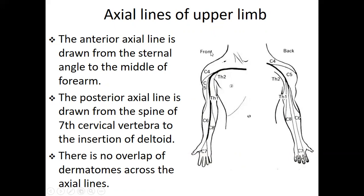Looking at the front view, the anterior axial line is drawn from the sternal angle to the middle of the forearm. The posterior axial line is drawn from the spine of the C7 cervical vertebra to the insertion of the deltoid muscle. Importantly, there is no overlap of dermatome across the axial line - this is the key point you have to know.